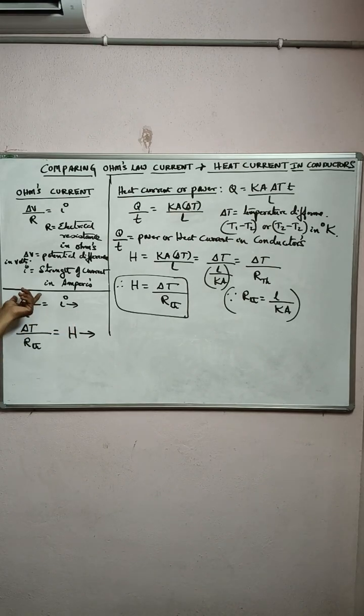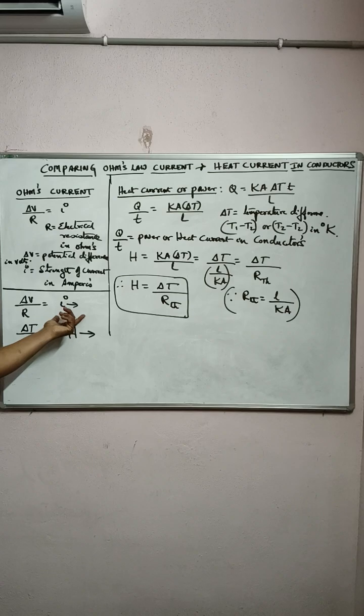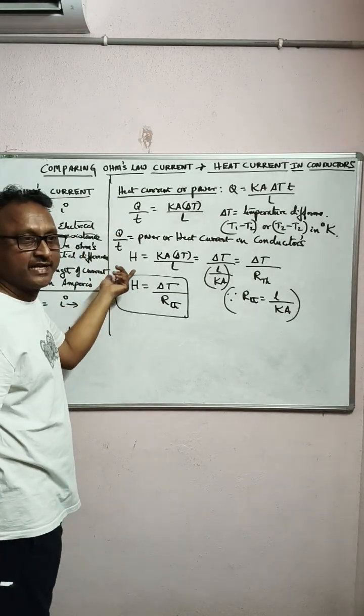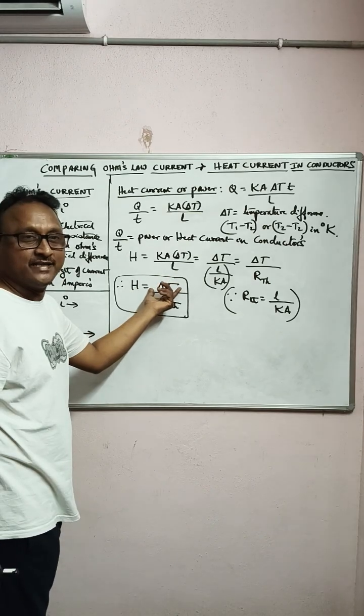Electrical current is in amperes, but here heat current, which is Q by T, rate of flow of heat in a conductor, is delta T, that is temperature difference, by thermal resistance.